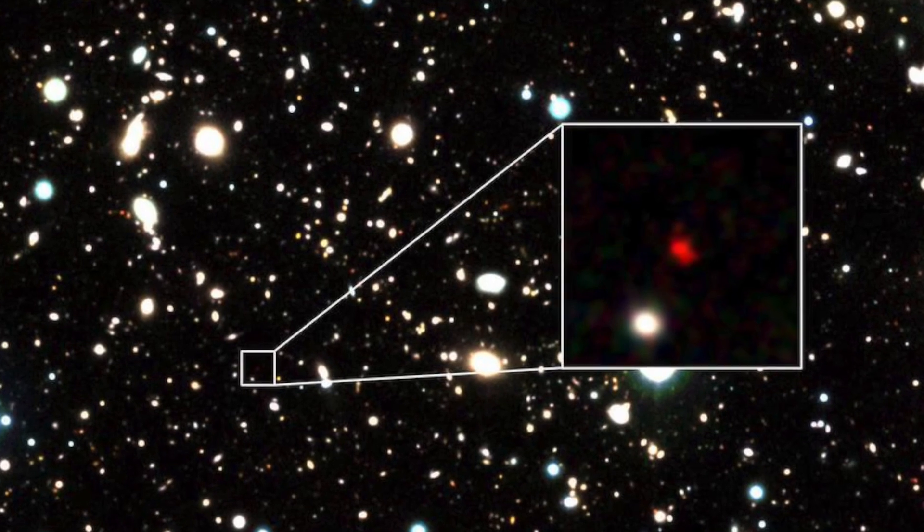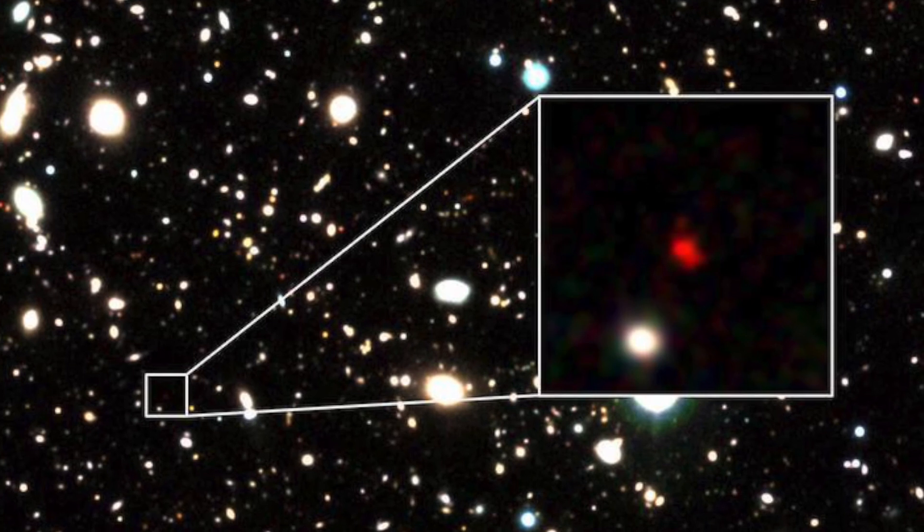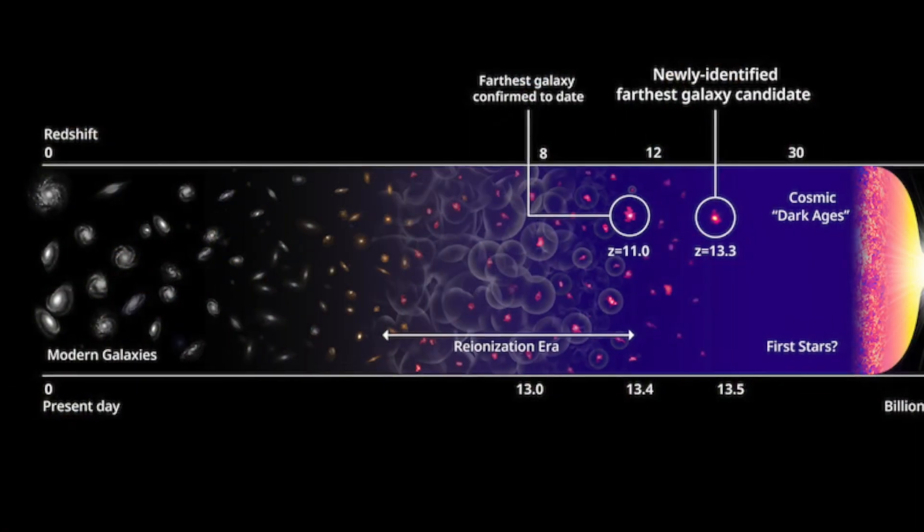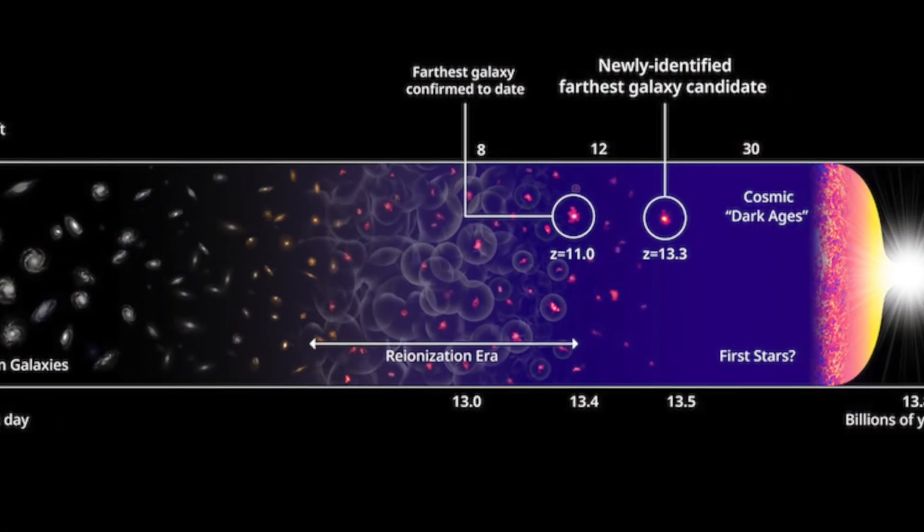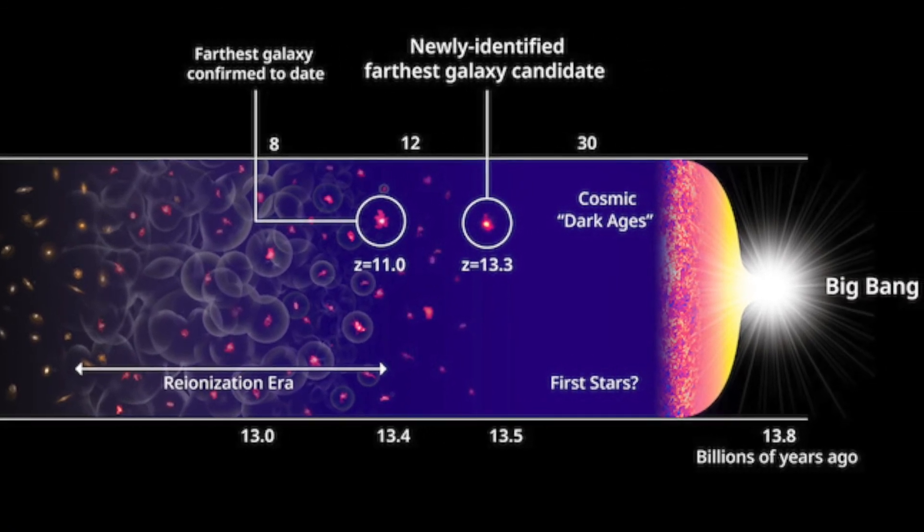HD1 is particularly bright in ultraviolet light, indicating highly energetic activity in the galaxy. As such, scientists originally theorized it might be a starburst galaxy, or one that produced stars at a relatively high rate.